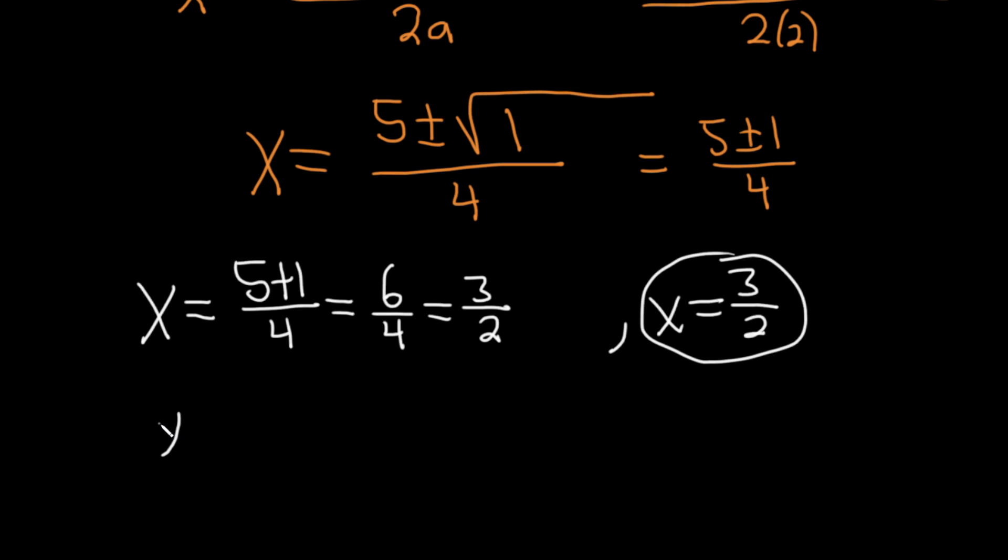The other answer will be x = (5 - 1) / 4. Now we're taking the minus case. So that's 4/4, which is equal to 1. So the other answer is x = 1.